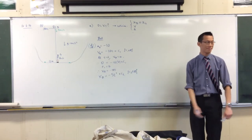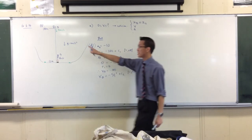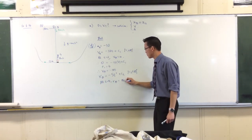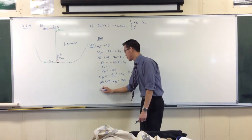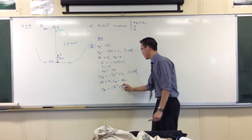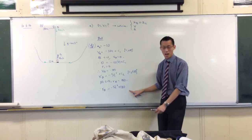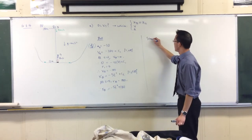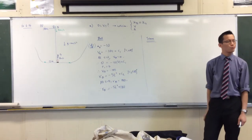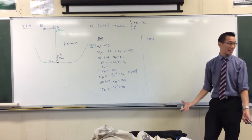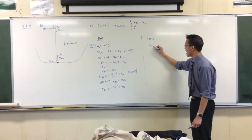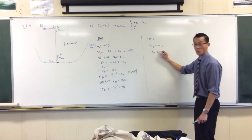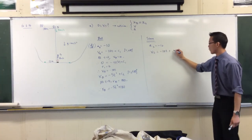To evaluate the displacement constant, I use another initial condition: the ball starts up at the lookout, so at time zero its displacement is 180. That fixes the constant. Now I know at any time t where the ball is and how fast it's going. For the stone, the same acceleration — negative 10 — applies, but integrating gives a new constant.